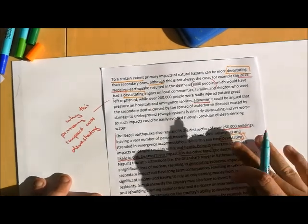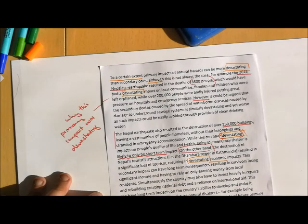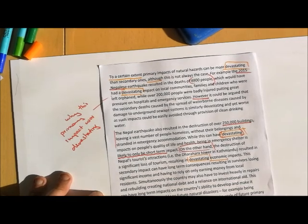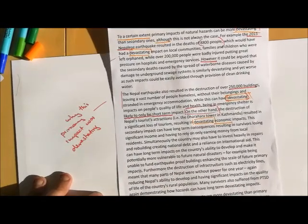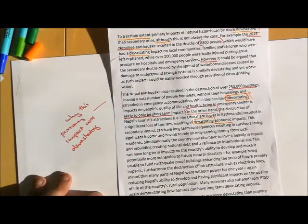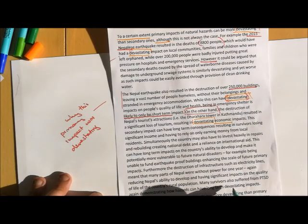Furthermore, the destruction of infrastructure such as electricity lines meant that many parts of Nepal were without power for one year, again reducing Nepal's ability to develop and having significant impacts on the quality of life of the country's rural population. Many survivors also suffered from post-traumatic stress disorder, again demonstrating how hazards can have long-term devastating impacts.